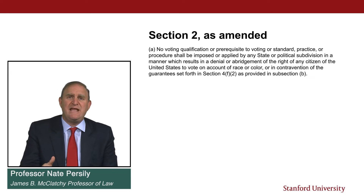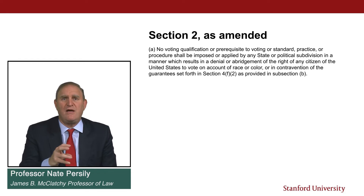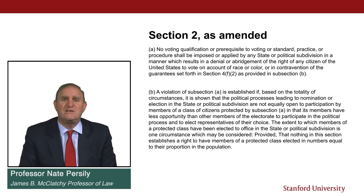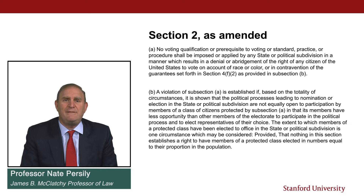What's new in 1982 and has been quite important in regulating racial gerrymandering is Section 2B, which says a violation is established if, based on the totality of the circumstances, the political processes leading to nomination or election are not equally open to participation by racial or language minorities — in that they have less opportunity than other members of the electorate to participate in the political process and to elect representatives of their choice.